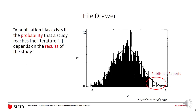Another issue is the file drawer problem. The likelihood of a result being published depends on the result itself. If we look at a theoretical normal distribution of scientific findings, apparently only the extreme ones are being published. What if for every effect we find in the literature, there are actually multiple other studies showing none at all, but we never heard about them because they simply weren't published? Only positive, interesting, and exciting effects find their way into the literature, which distorts the body of literature and the reality we assume.